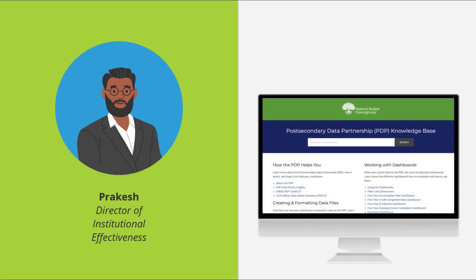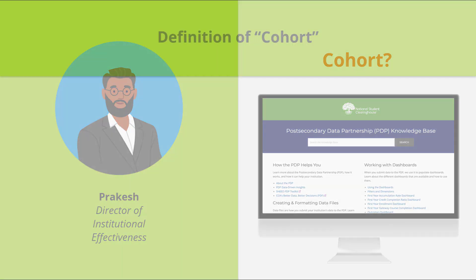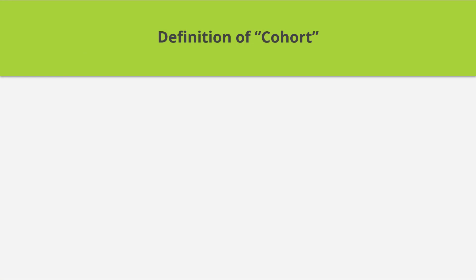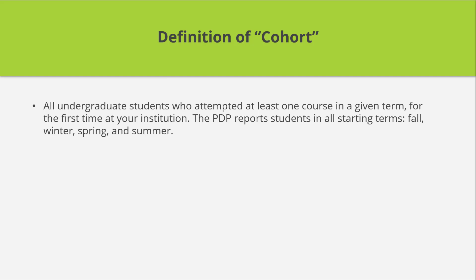Next, Prakash begins to review the data elements needed for the file uploads into the PDP system. His first question is the definition of cohort. Prakash realizes that PDP is more inclusive than other reporting his office manages. The definition of cohort includes all undergraduate students who attempted at least one course in a given term for the first time at your institution. The PDP reports students in all starting terms: fall, winter, spring, and summer.